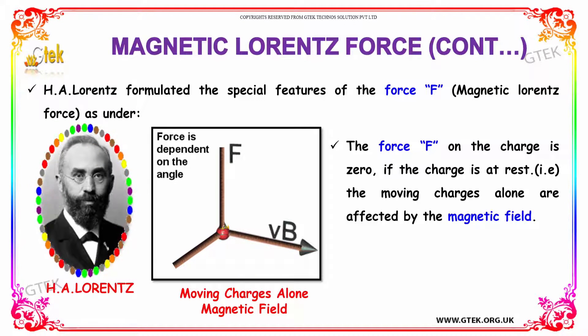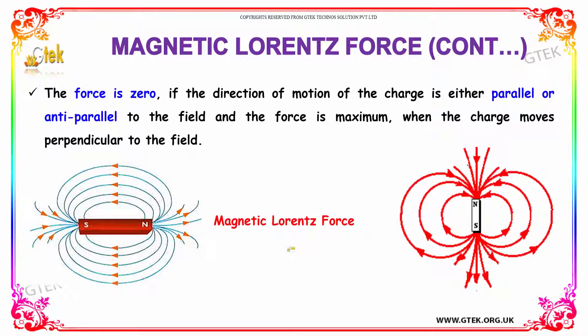The force F on the charge is zero if the charge is at rest. Therefore, only moving charges are affected by the magnetic field. The force is zero if the direction of motion is either parallel or anti-parallel to the field, and the force is maximum when the charge moves perpendicular to the field.